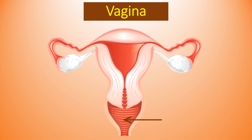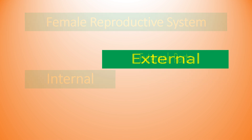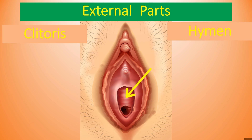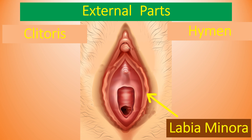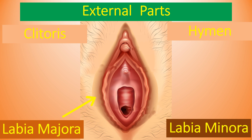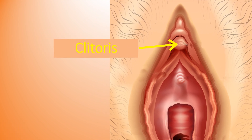We have discussed the internal parts of the reproductive system. Now let's move to the external parts. External parts of the female reproductive system consist of clitoris, hymen, labia majora, and labia minora. Let's now discuss the clitoris in detail.